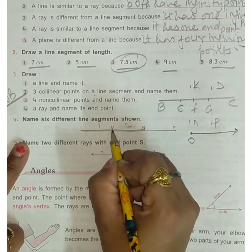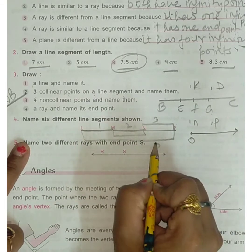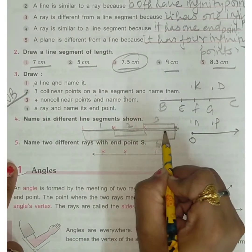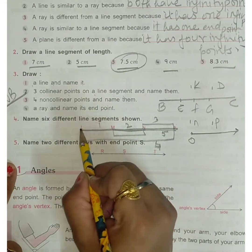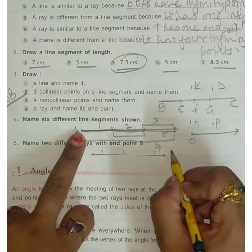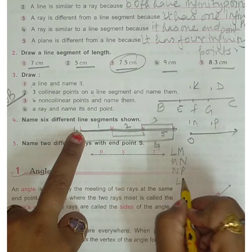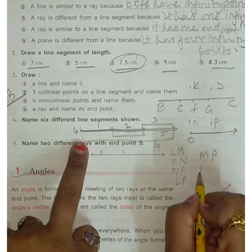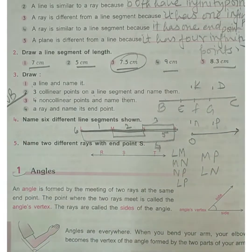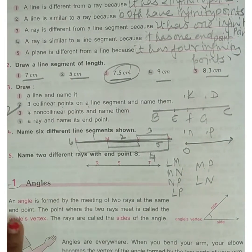Identify and name six different line segments from the figure: one from here — one, one from here — two, one from here — three, one from here — four, one from here — five, and one from here — six.